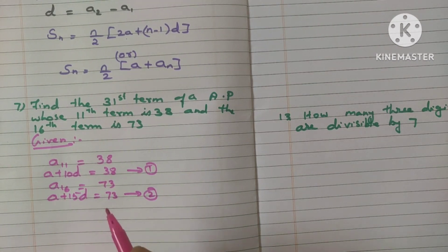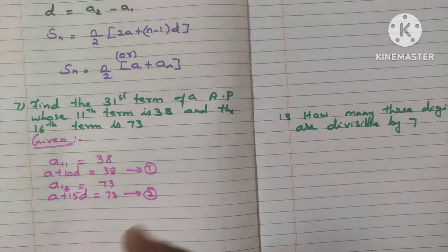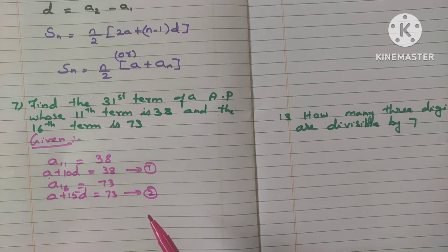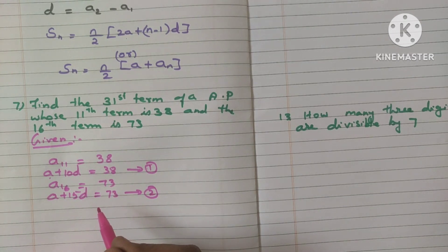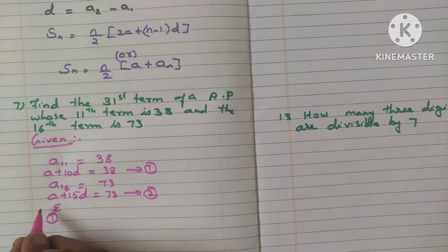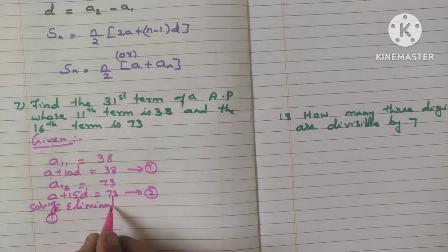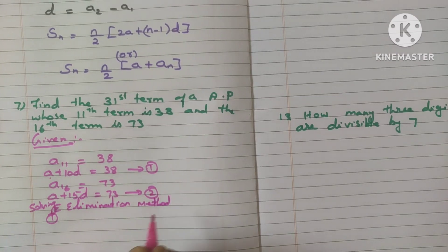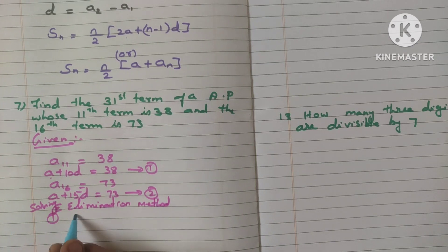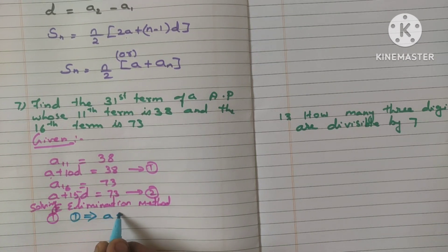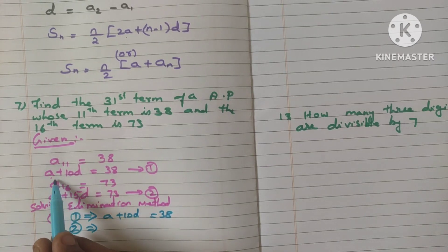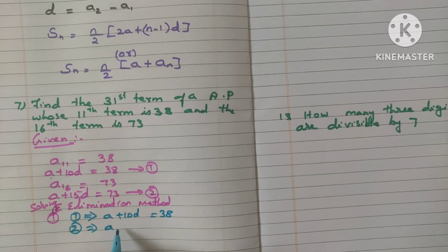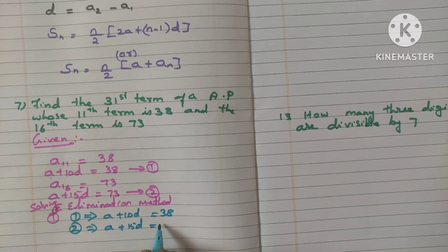See, whenever there is two variables in an equation, this is like a linear equation of two variables. Like A and D are the variable. Two equations you will be having. So either substitution method, elimination method, you can find out the A value and D value. So let me write the first equation. Solving by elimination method. First equation: A plus 10d is equal to 38. Second equation as it is. Because we can cancel this A and A in the first and second equation. So write as it is. A plus 15d, which is equal to 73.